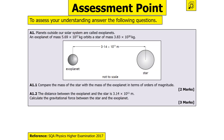The next question says: an exoplanet has mass 5.69 × 10²⁷ kg and orbits a star of mass 3.83 × 10³⁰ kg — compare their masses in orders of magnitude; and then the distance between them is 3.14 × 10¹¹ m — calculate the gravitational force between them. Pause the video now.